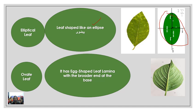Elliptical means the leaf is shaped like an ellipse. You can see it is tapered on one side and also tapered on the other side — such a leaf is called an elliptical leaf. Next is the oval or egg-shaped leaf: it is tapered at one side and rounded at the other side, and is called an ovate leaf.